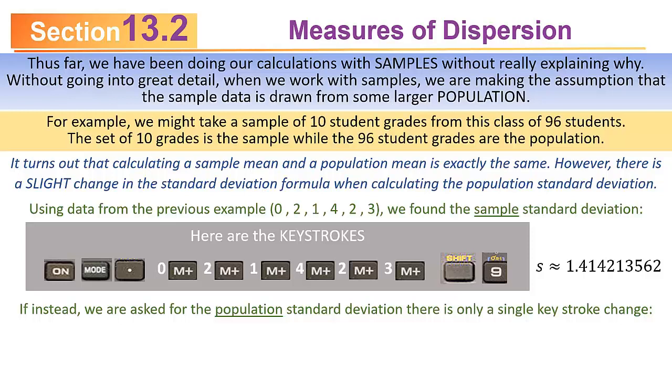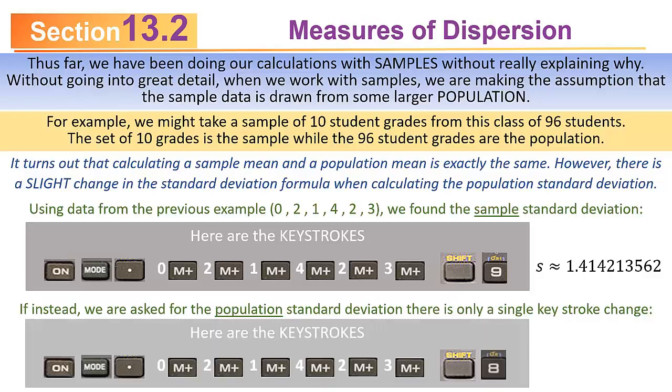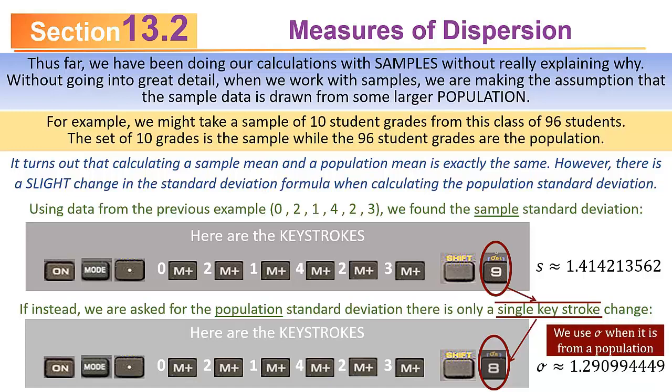Just to illustrate, suppose we take the data from the previous example: 0, 2, 1, 4, 2, 3. We found the sample standard deviation to be about 1.414213562. That was from a sample. If I told you that was the entire population, you have to do something differently, but it amounts to just one keystroke. Every single keystroke is the same until you get to the very end. If you're doing a sample standard deviation, you do shift 9. If you're doing a population standard deviation, you do shift 8. So it's strictly one press different.